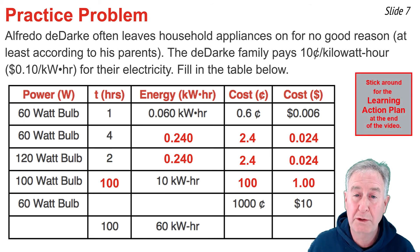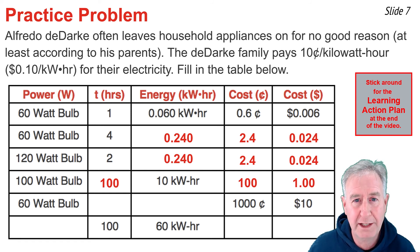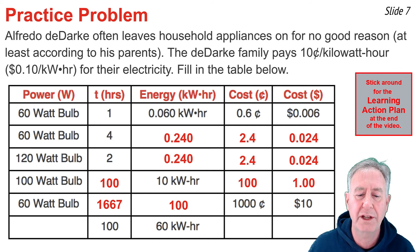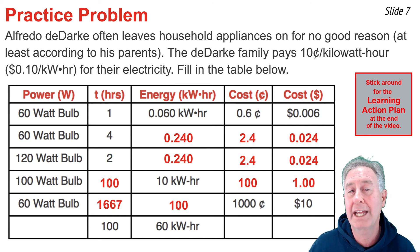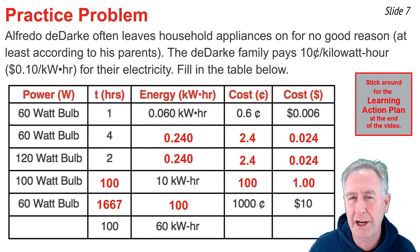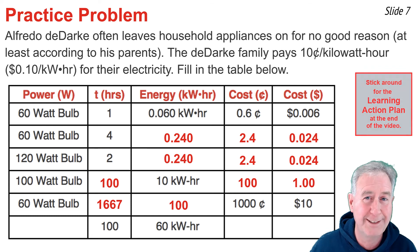In row 5, working backwards from cost: 1,000 cents divided by 10 cents per kilowatt-hour gives 100 kilowatt-hours of energy used. With a 60-watt bulb converted to 0.060 kilowatts, time equals energy divided by power: 100 divided by 0.060 gives approximately 1,667 hours — that's how long you'd need to use the bulb to spend 10 dollars.